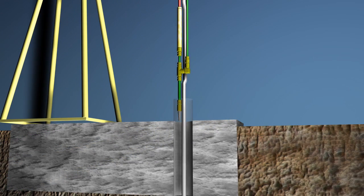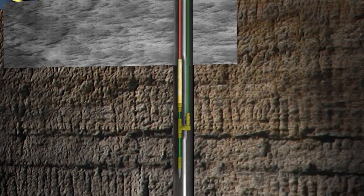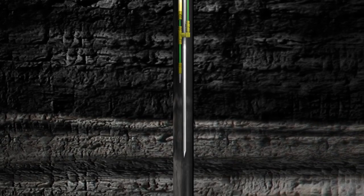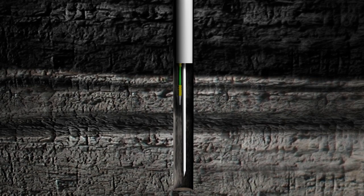The grout pipe assembly is then lowered into the borehole through the casing or drill pipe. On reaching the bottom of the hole, the casing or drill pipe is withdrawn over the grout pipe assembly.